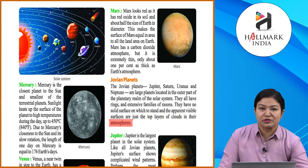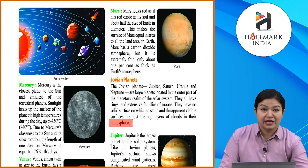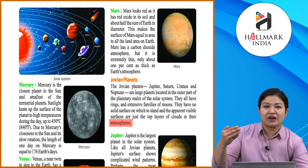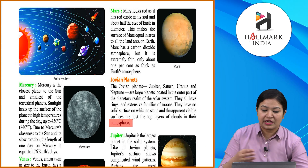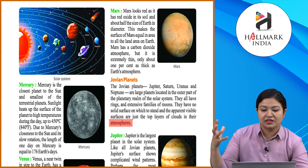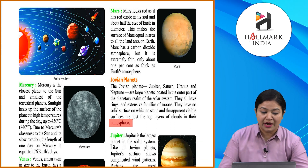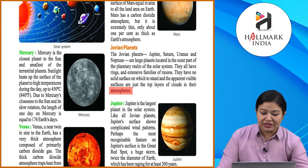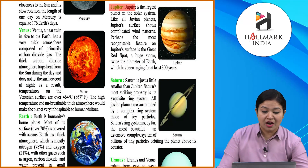The Jovian planets include Jupiter, Saturn, Uranus, and Neptune. They are located far from the Sun, and they have many natural satellites. Jupiter is the largest planet in the solar system.